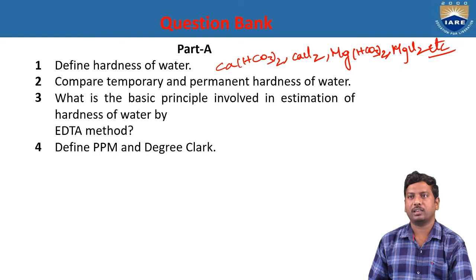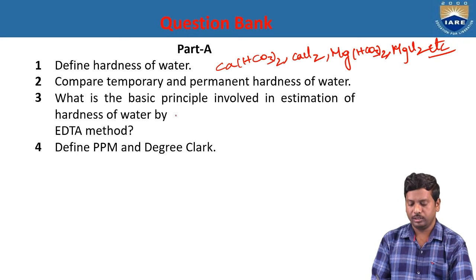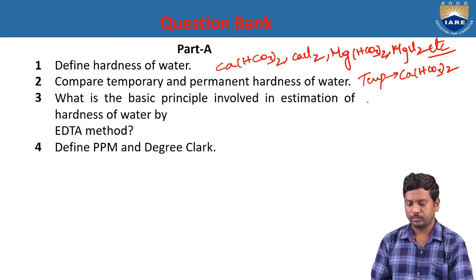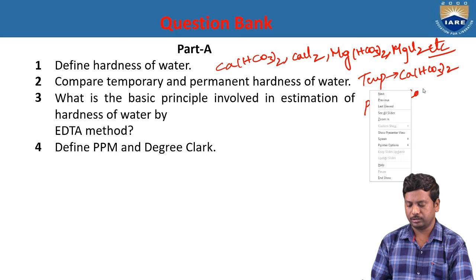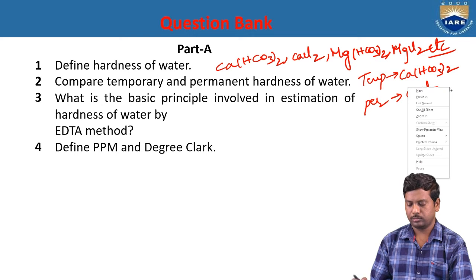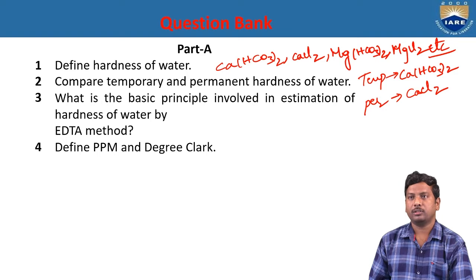Compare temporary and permanent hardness of water. Temporary hardness is mainly caused by the bicarbonate salts of calcium and magnesium — that means calcium bicarbonate. And permanent hardness is caused by the chloride and sulphate salts of calcium and magnesium — that means calcium chloride.